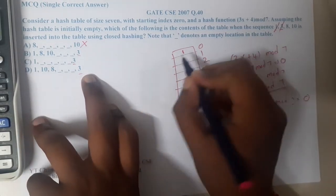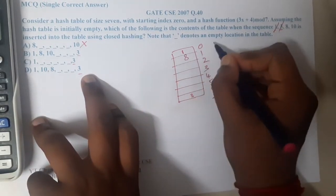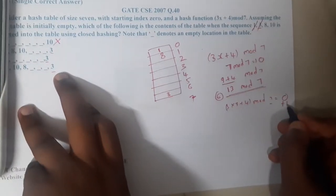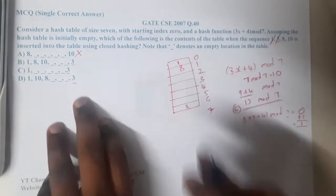Linear probing: at 0 it's not possible, so you increment by 1. At location 1 you will place the 8.